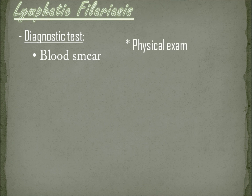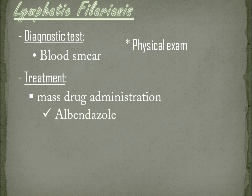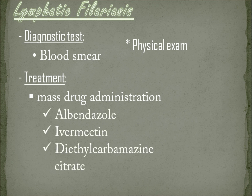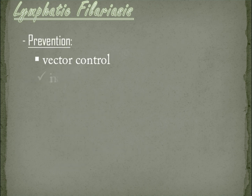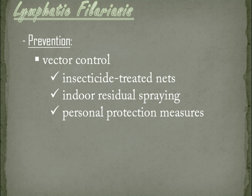Physical exam is also important. Treatment and prevention. WHO recommends a preventive chemotherapy strategy for lymphatic filariasis elimination, which is mass drug administration. It involves an annual dose of medicines to the entire at-risk population, including albendazole, ivermectin, and diethylcarbamazine citrate. Vector control measures include insecticide-treated nets, indoor residual spraying, or personal protection measures.